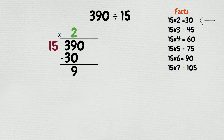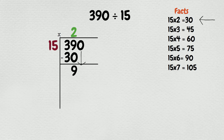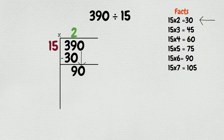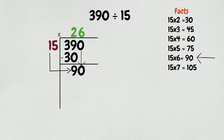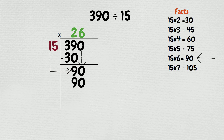Now bring down the digit in the dividend that we have not divided yet. We will bring down the 0 to make 90. How many times does 15 go into 90? 15 times 4 equals 60, 15 times 5 equals 75, and 15 times 6 equals 90. So 15 goes into 90 six times. Add the 6 on top. There is no remainder, and once you get a 0 at the bottom you are done. So 390 divided by 15 equals 26.